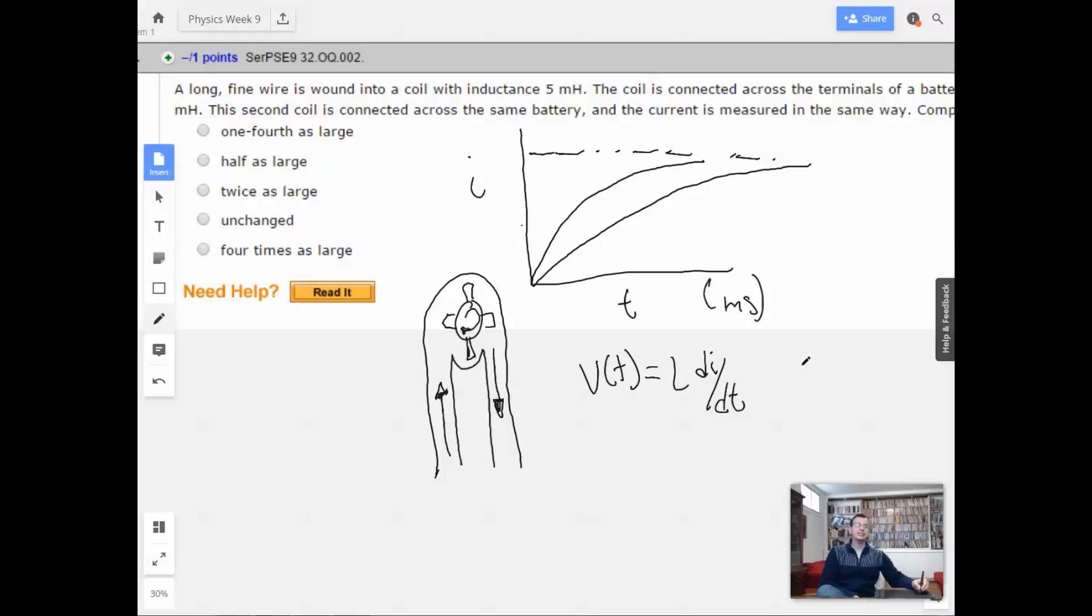For capacitance, I think it's just the opposite, so it's i of t equals c dv dt. So, one way to think of this is an inductor opposes a change in current, a capacitor opposes a change in voltage, and that's where this capacitance and that inductance comes in.